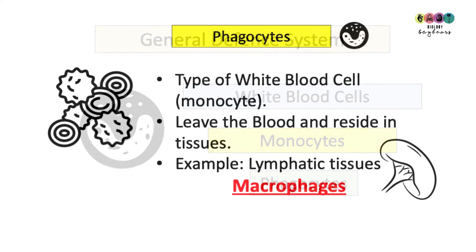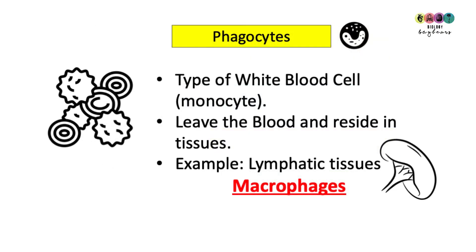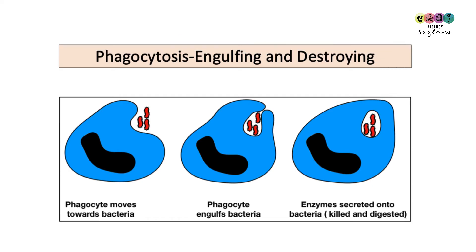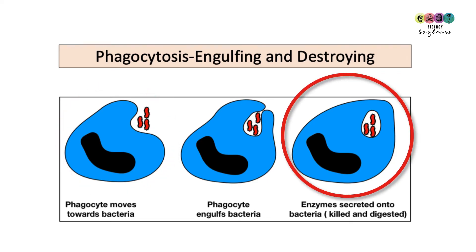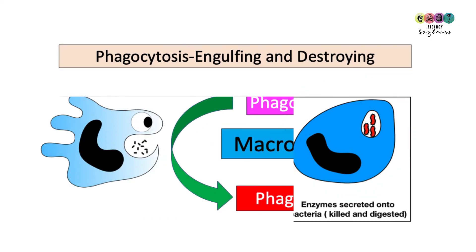When phagocytes are particularly large, they're called macrophages. Macrophages reside in the tissues and can patrol, moving around looking for invaders. You find high numbers of them in lymphatic tissues, for example in your spleen and tonsils. In this picture, you can see a large blue macrophage surrounding bacteria — it engulfs them and secretes enzymes to destroy the bacterial cells.